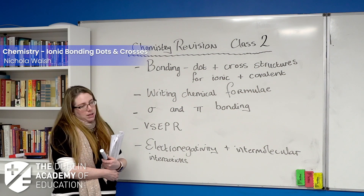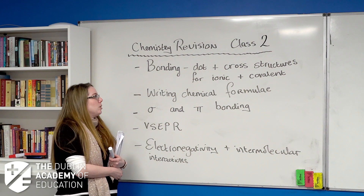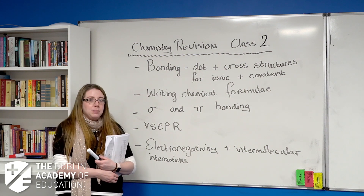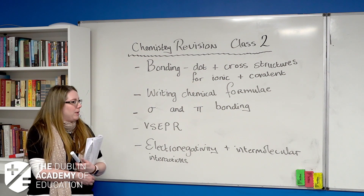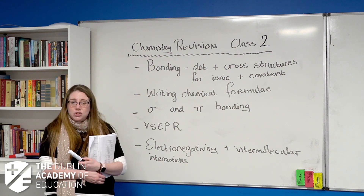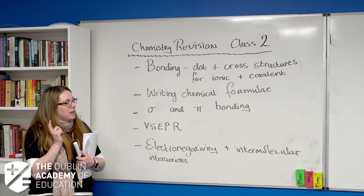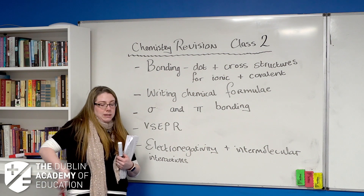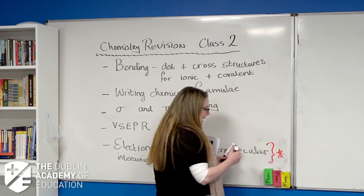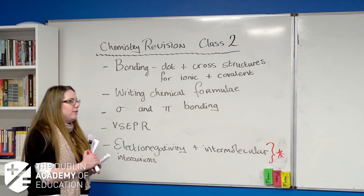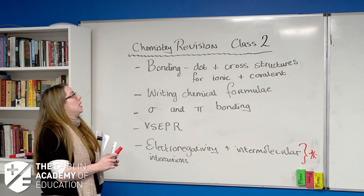This week we're going to look at bonding — dot and cross structures for ionic and covalent bonding, writing chemical formulae particularly for polyatomic ions, sigma and pi bonding, VSEPR to determine shapes of molecules, and electronegativity and intermolecular interactions. The last one is the most important for this topic because it comes up again in organic chemistry when figuring out boiling points.